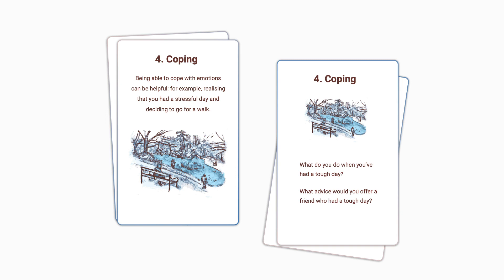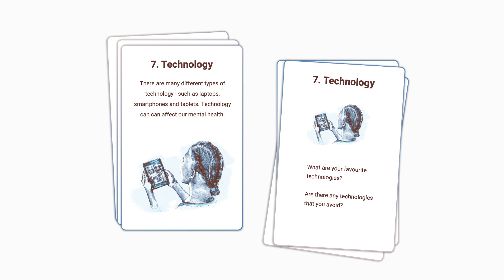Interested in the design of inclusive mental health technologies, we designed the following pair of cards. The description of the technology-related card is: there are many different types of technology, such as laptops, smartphones and tablets. Technology can affect our mental health. Potential questions are: what are your favorite technologies? Are there any technologies that you avoid?